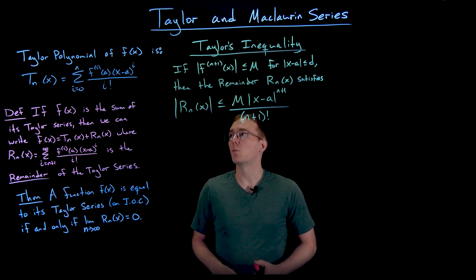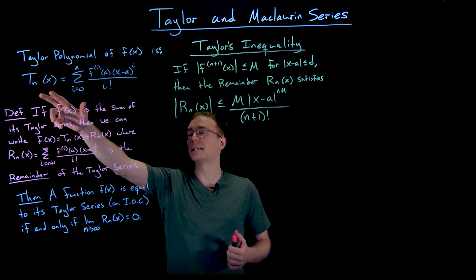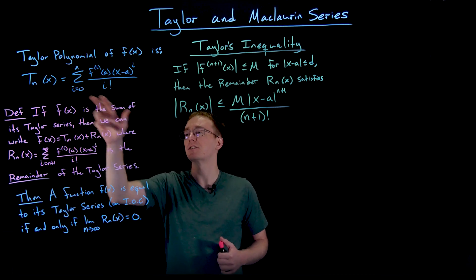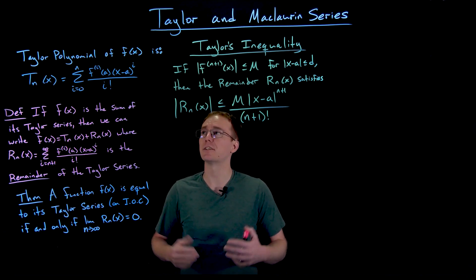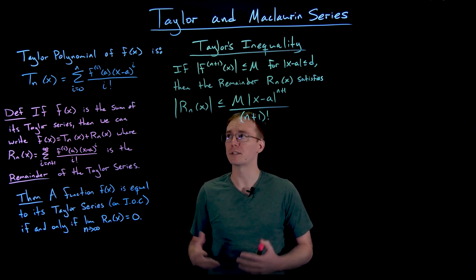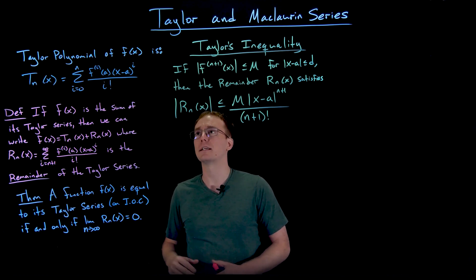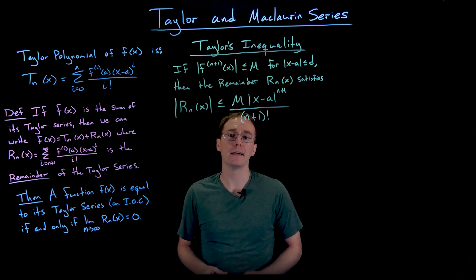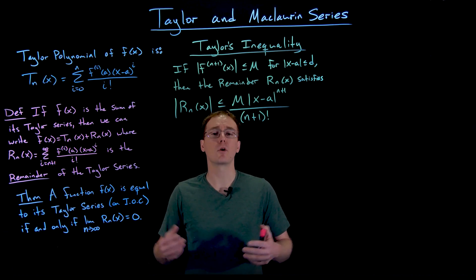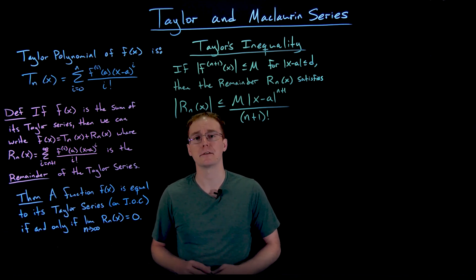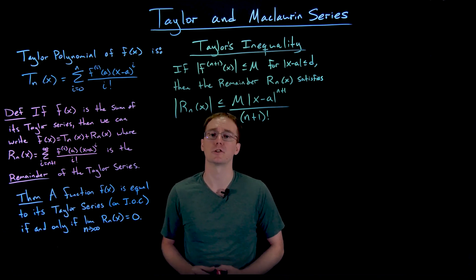Let's quickly review what a Taylor polynomial is. A Taylor polynomial of a function f(x) is denoted as T_n(x), and it's going to be the sum from i equals zero to n of the i-th derivative of our function evaluated at a — the center of our Taylor polynomial or Taylor series — times (x minus a) to the power of i, divided by i factorial. This is just the partial sum of our Taylor series, the sum from i equals zero to n, those first n plus one terms.